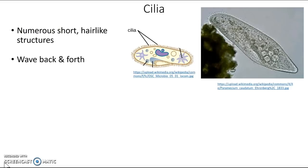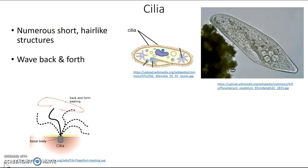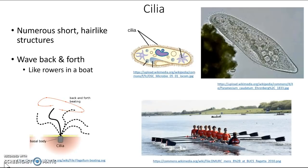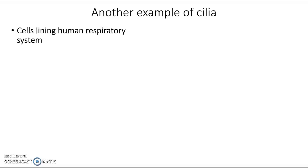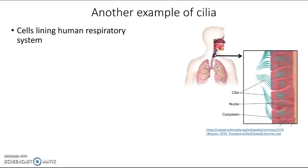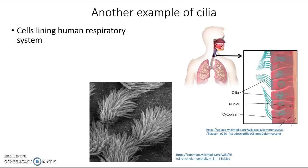Cilia work by waving back and forth. If you imagine all these hundreds or even thousands of tiny hair-like structures all waving back and forth on the outside of a cell, it's almost like rowers on a boat — each with their oar, all rowing at the same time, moving that boat pretty quickly wherever it needs to go.